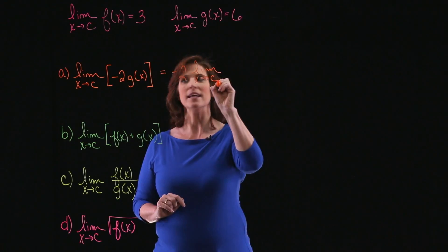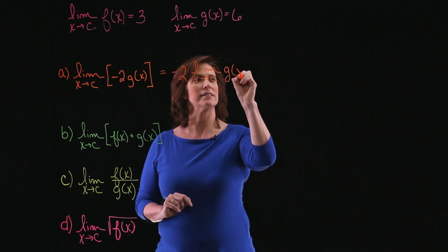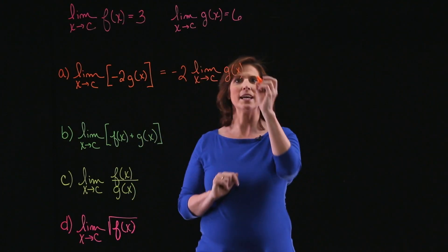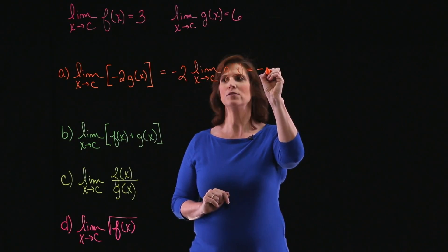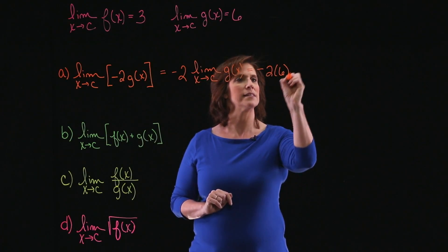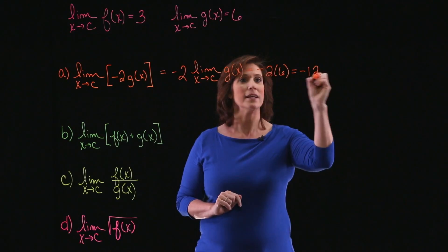So I can rewrite this limit as minus 2 times the limit as x approaches c of g of x. And I know that this limit equals 6. So I've got negative 2 times 6, and my result is minus 12.